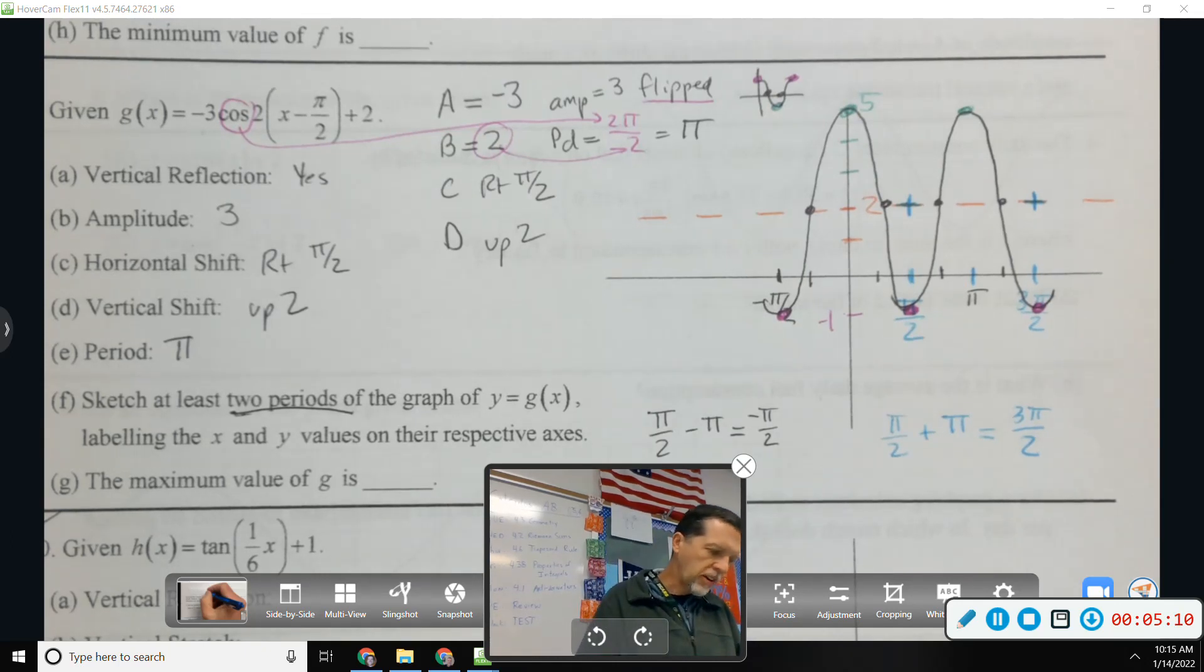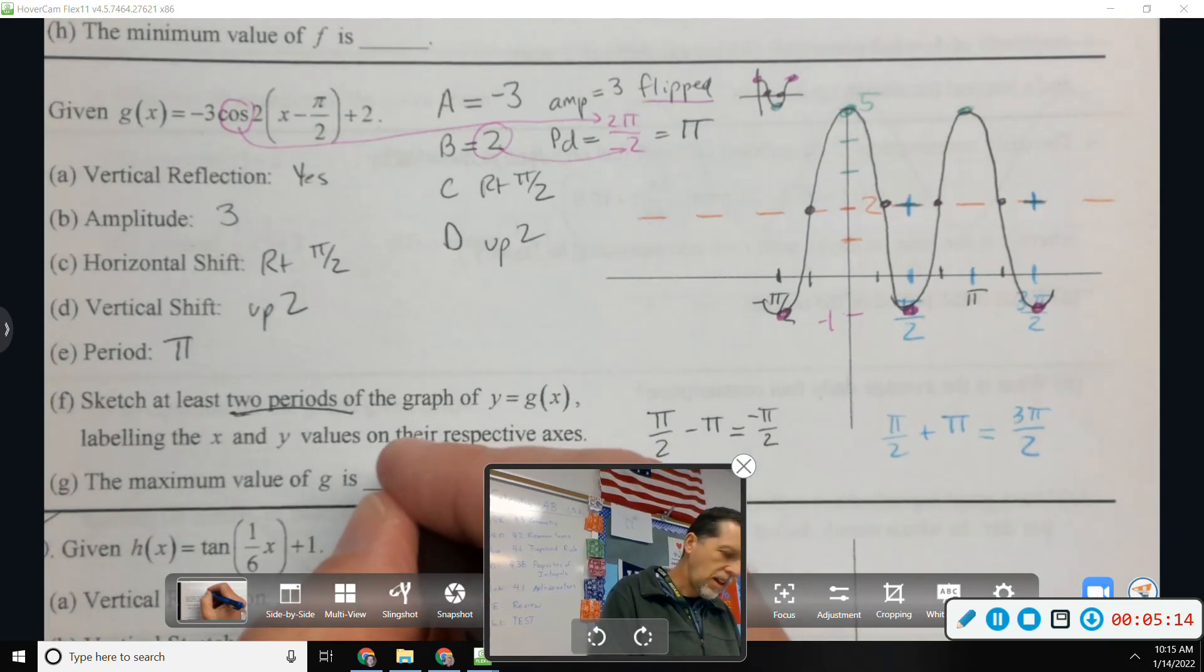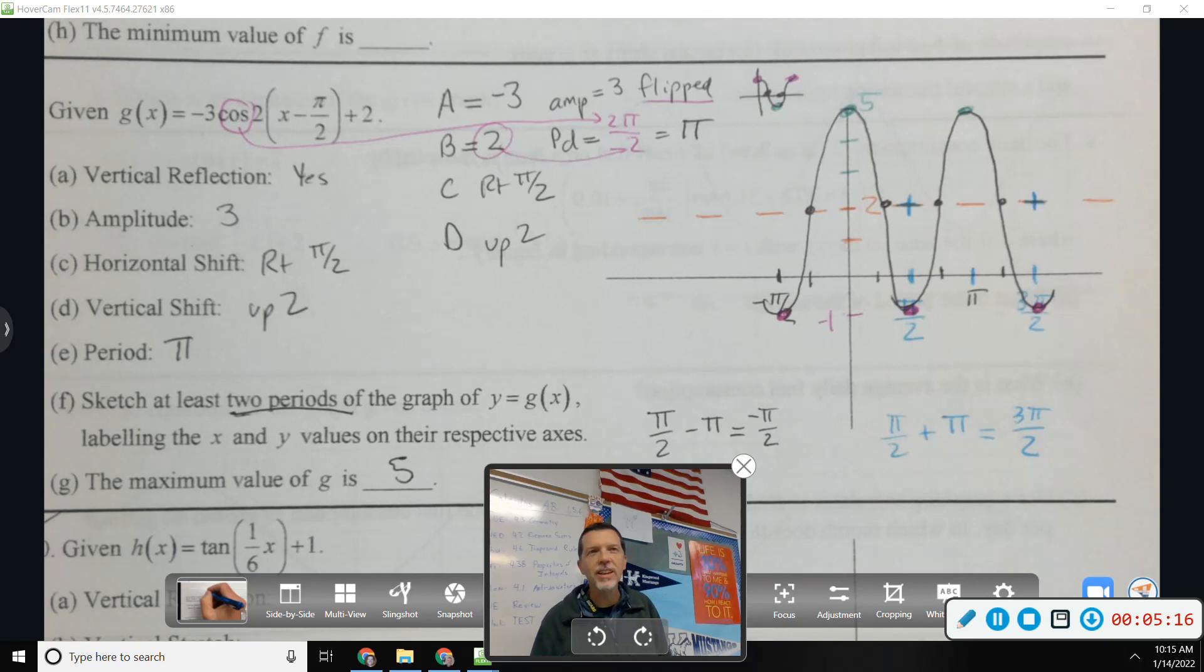Oh, there's an extra question down there. The maximum value of g is 5. Yeah, that's an easy question as long as you graph it correctly. Thank you.